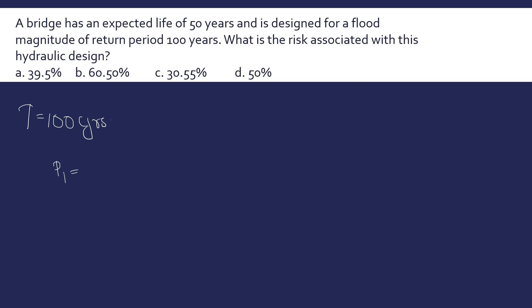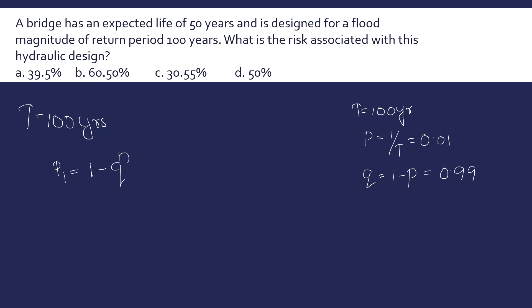Using P₁ = 1 − Qⁿ: T = 100 years, so P = 1/T = 0.01, and Q = 1 − P = 0.99. Then P₁ = 1 − (0.99)⁵⁰. Solving this we get the answer 39.5%. So the risk associated with this hydraulic design is 39.5%.